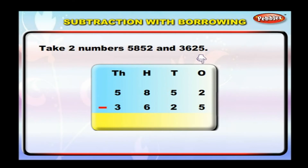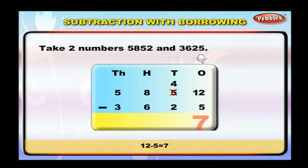Subtract the ones. Here we cannot subtract five from two because five is greater than two. In that case, we borrow one from the tens of the first number, that is from five. Now two becomes twelve. We can deduct five from twelve, so twelve minus five is equal to seven. Write seven below the ones column.